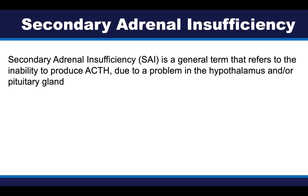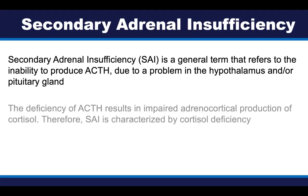Secondary adrenal insufficiency is a general term that refers to the inability to produce adrenocorticotropic hormone, ACTH. This is generally due to some problem with the hypothalamus and/or pituitary gland, which make ACTH. This deficiency of ACTH results in an impaired adrenocortical production of cortisol. Therefore, secondary adrenal insufficiency is typically characterized by cortisol deficiency.